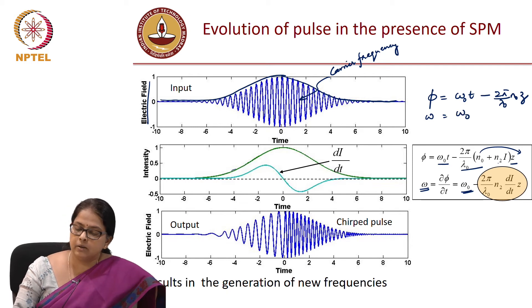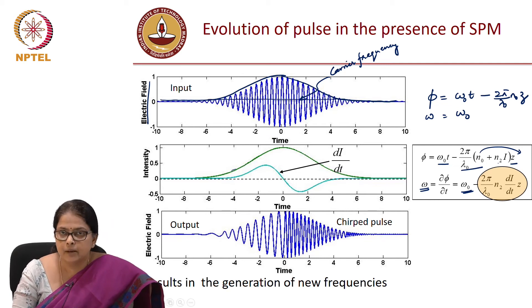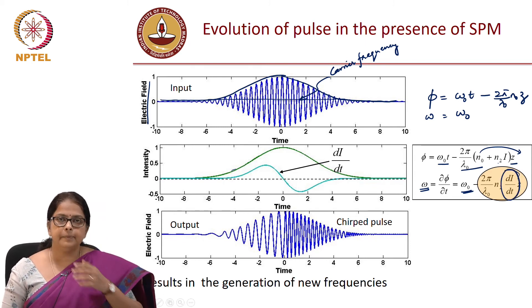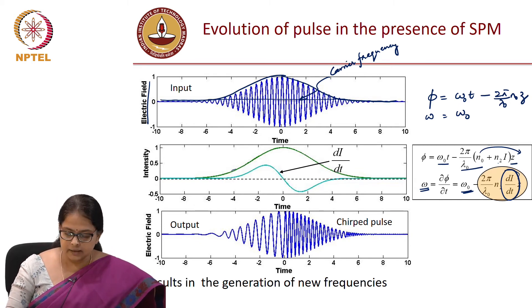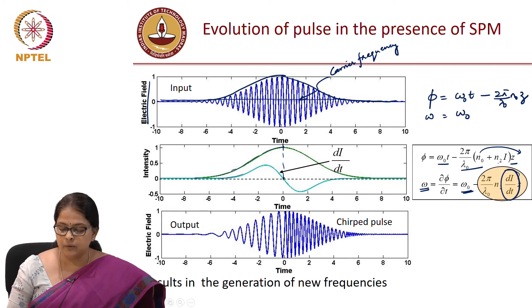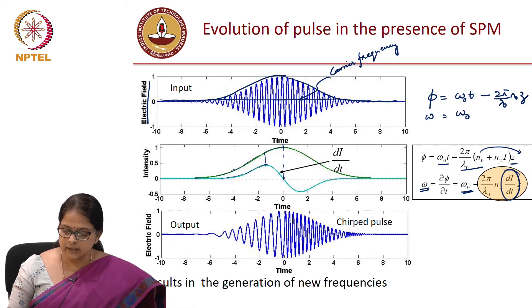Let us sketch dI/dt. As intensity increases, the slope also increases. At t = 0, the intensity is maximum, so the slope is zero — and somewhere in between, dI/dt has a maximum. As intensity falls, the slope decreases, reaches a negative maximum, then returns to zero. So this is how dI/dt behaves. The instantaneous frequency is ω₀ minus a constant times dI/dt. At the center of the pulse, dI/dt = 0, so ω = ω₀.